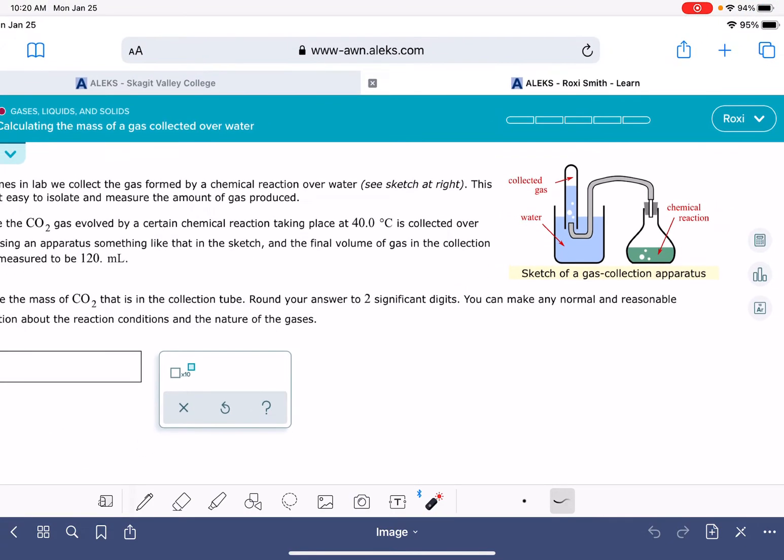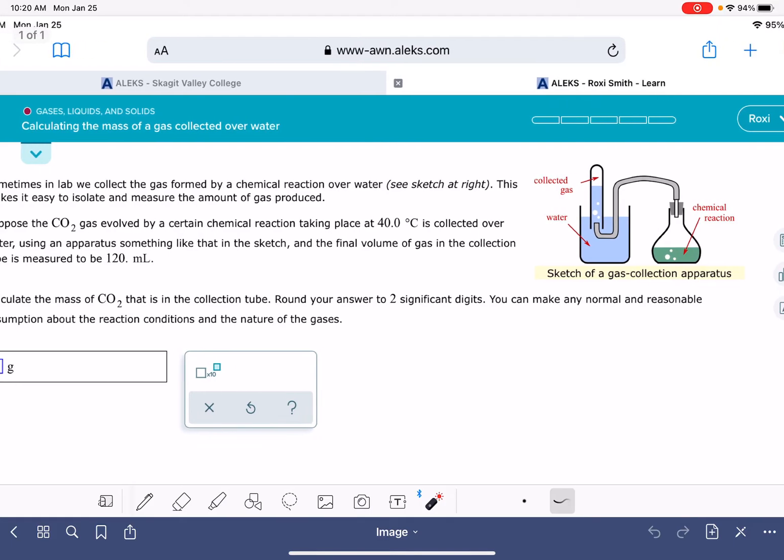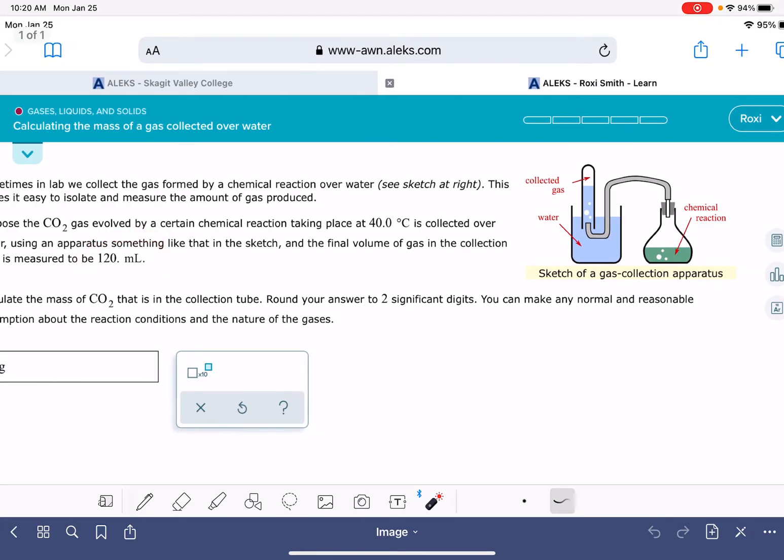The gas is being collected over the surface of water, and the problem is asking us to calculate the number of grams of gas being collected in this space. It tells us that the gas temperature is 40 degrees Celsius, the final volume of the gas is 120 milliliters, and that's the only information it's straight up giving us.